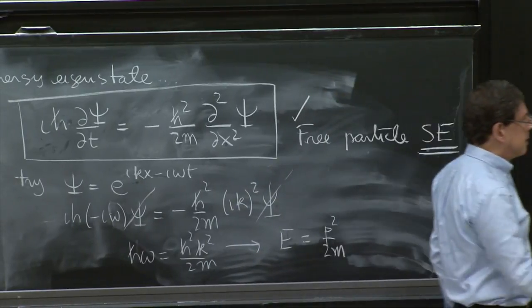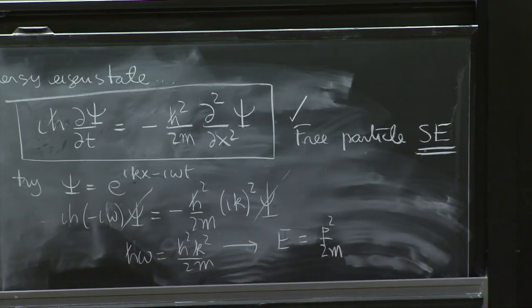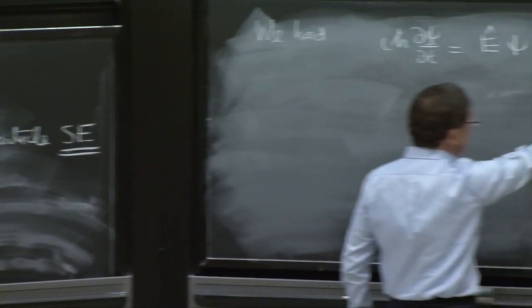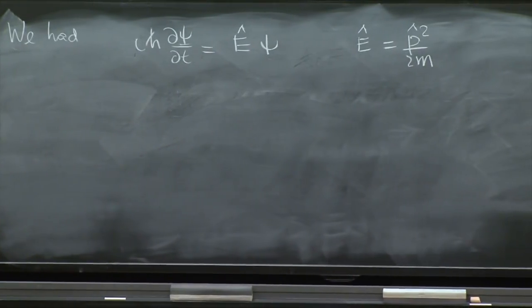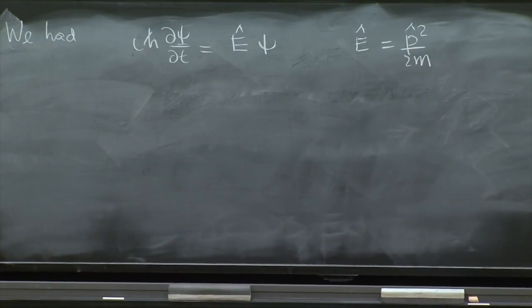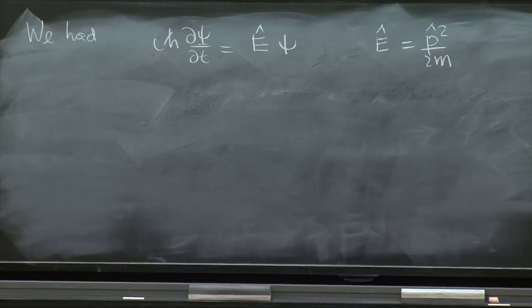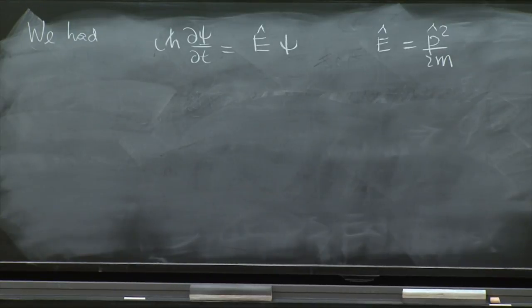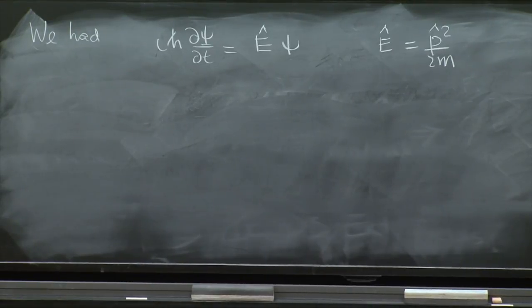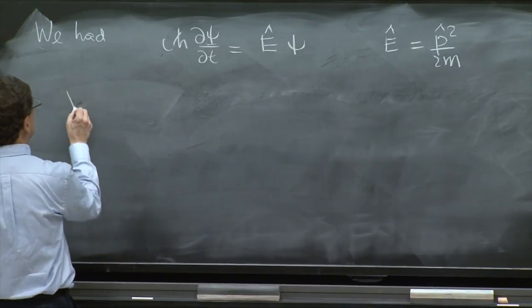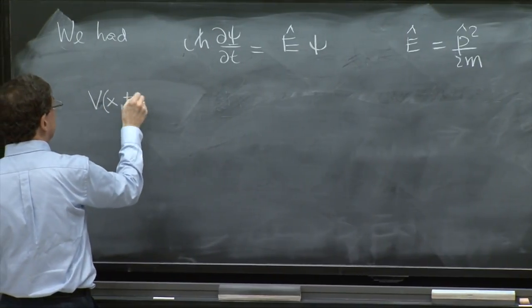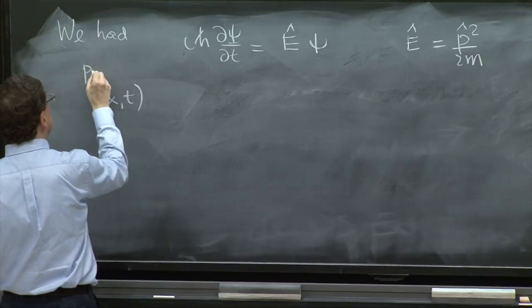You should realize it's the same thing as this, because p is h bar over i d dx. And now, Schrödinger did the kind of obvious thing to do. He said, well, suppose I have a particle moving in a potential, a potential v of x and t.